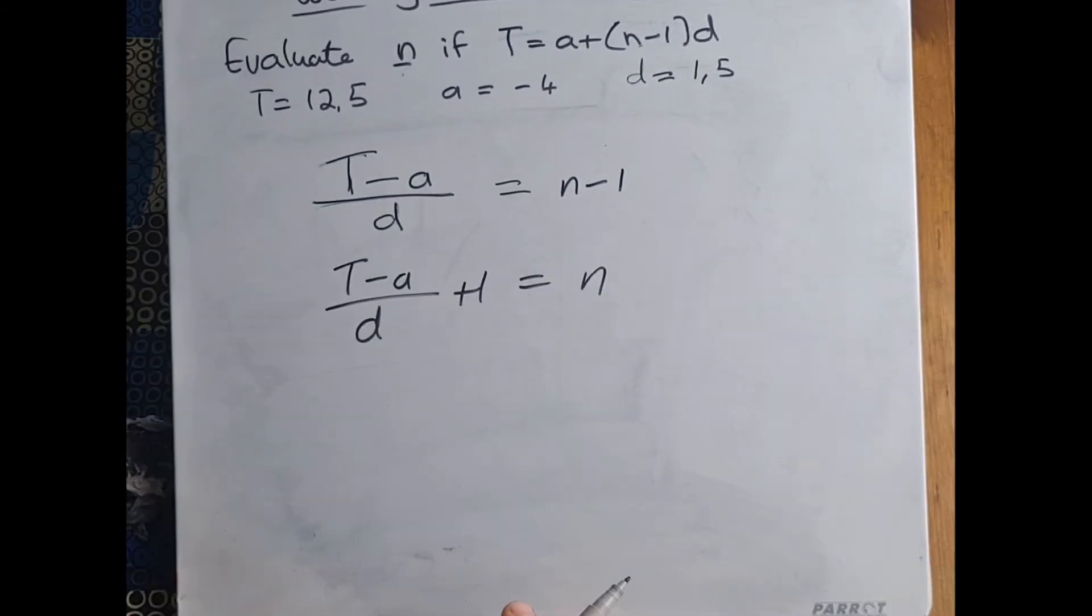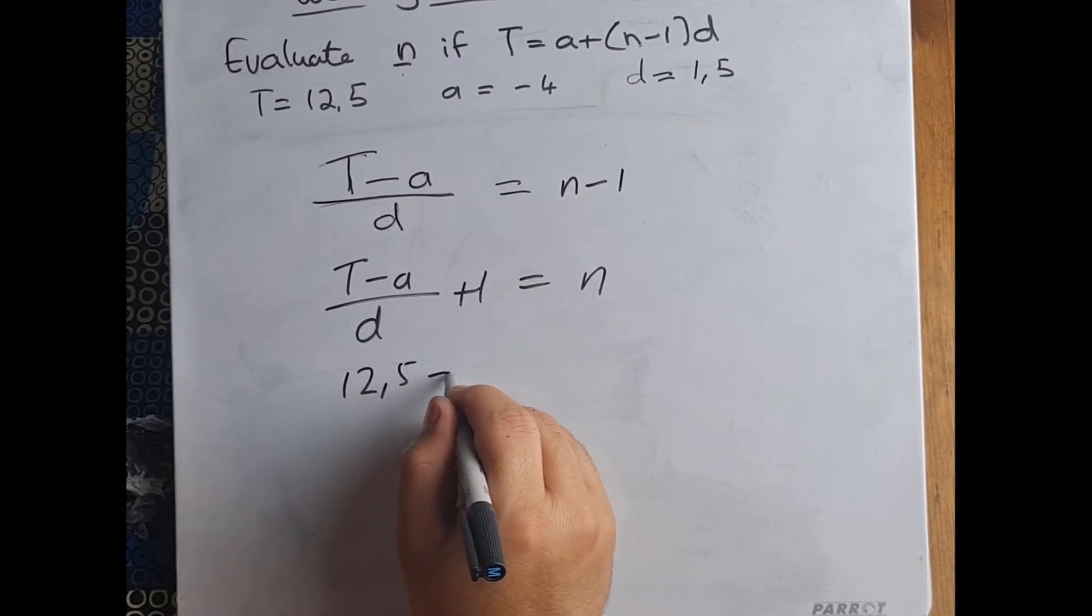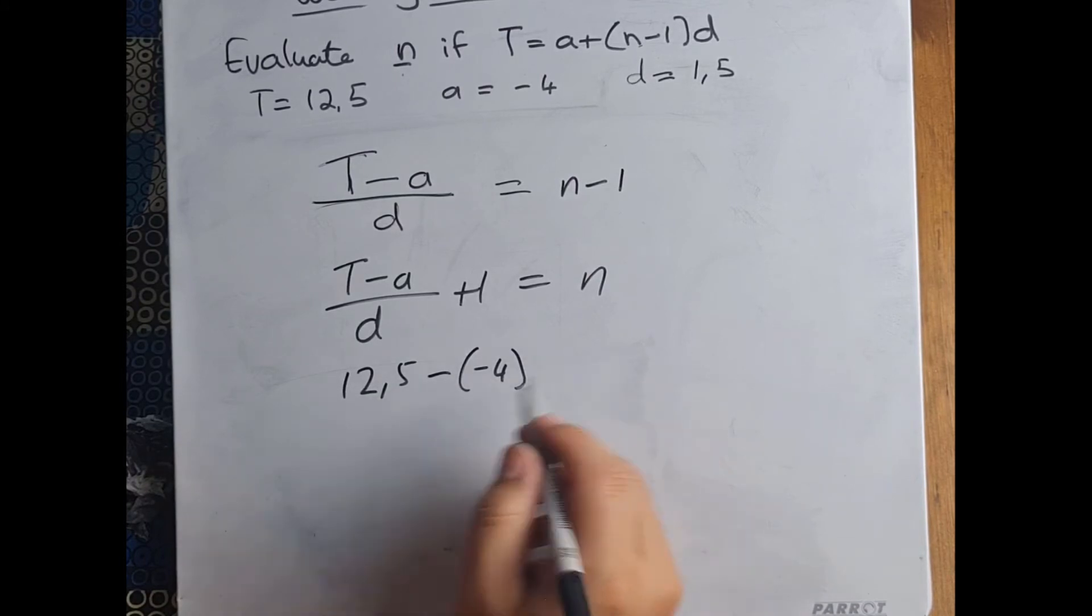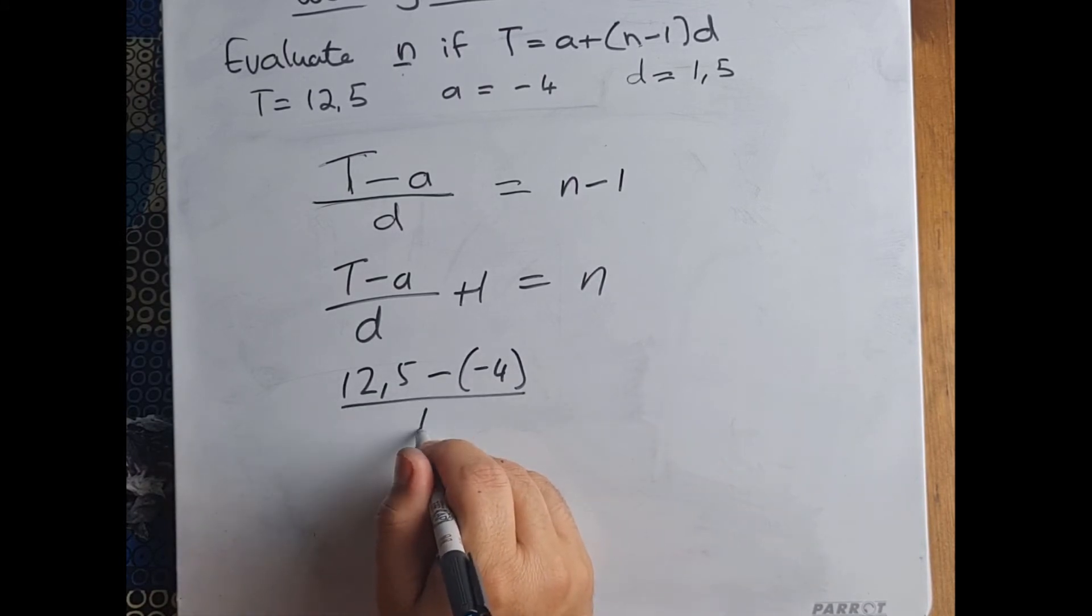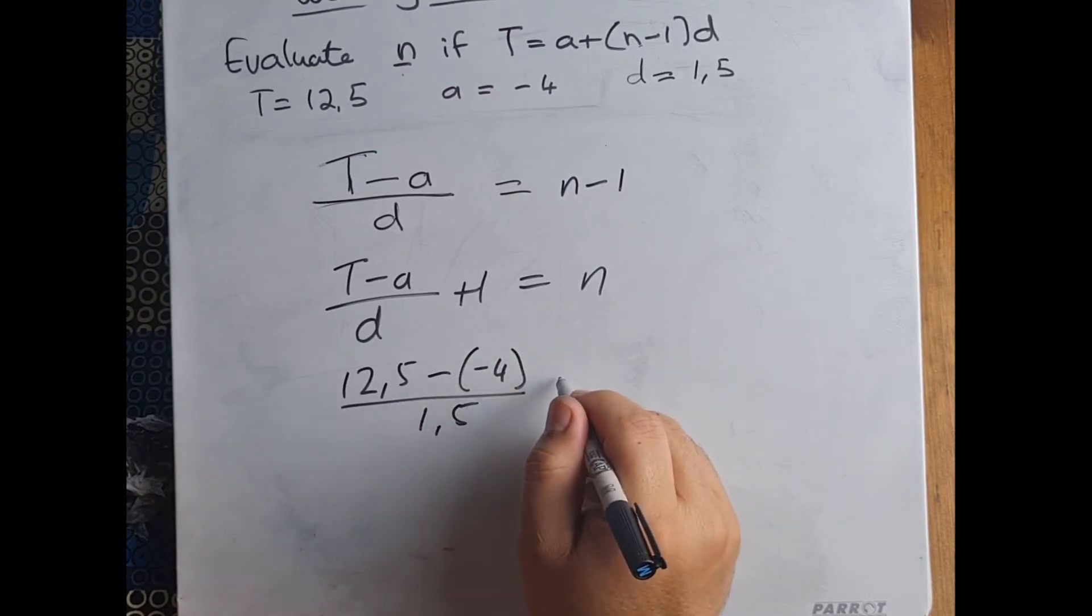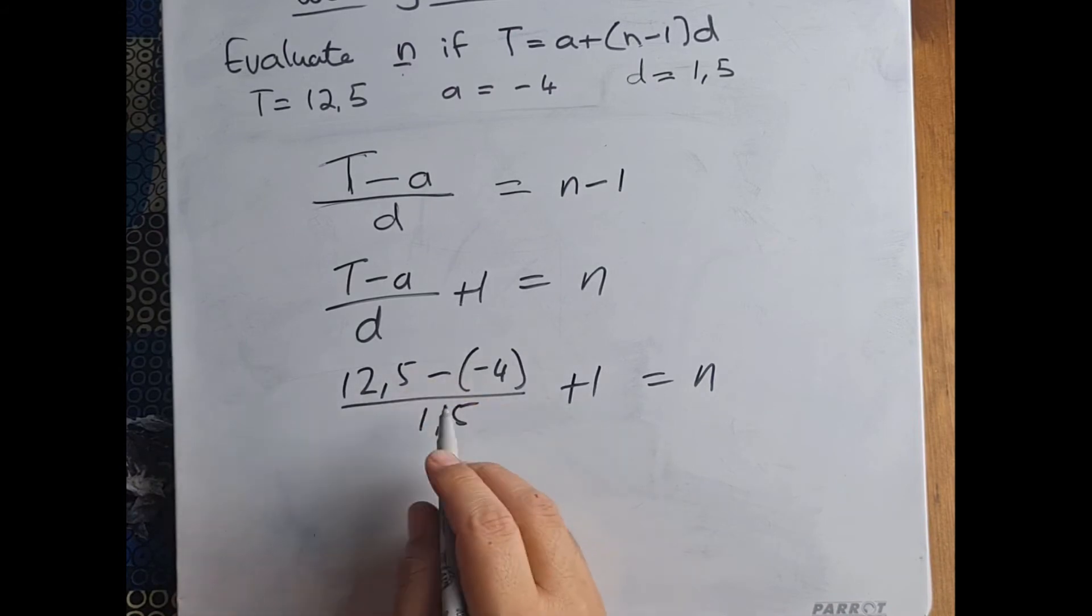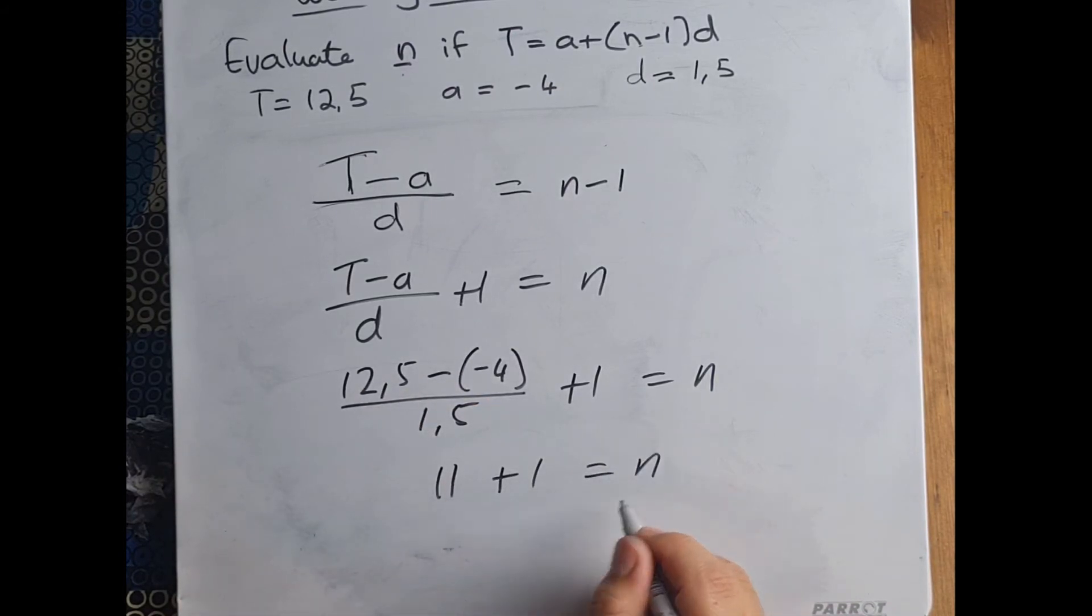And now I can process my entire formula. I can say, okay, 12.5 - (-4) / 1.5, and then whatever that answer is plus 1 will give me what n is. This will give me an answer of 11 + 1 = n, therefore n = 12.